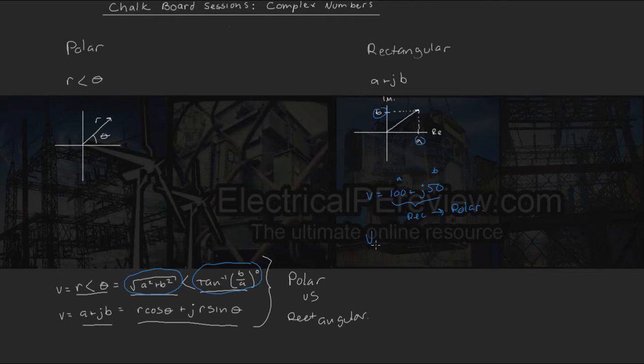So our vector v in polar form will be the same thing as the square root of 100 squared plus 50 squared at an angle of inverse tan 50 over 100.